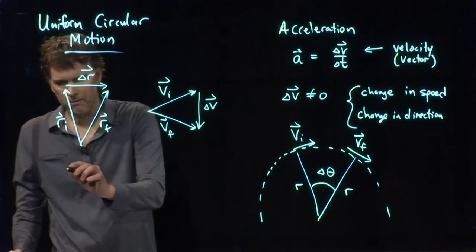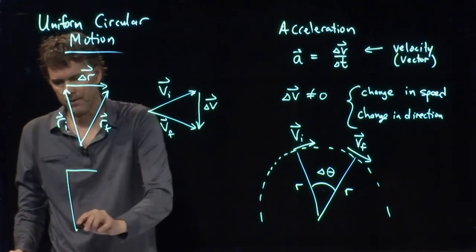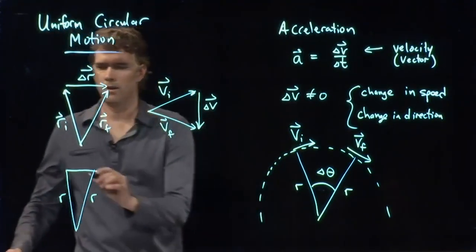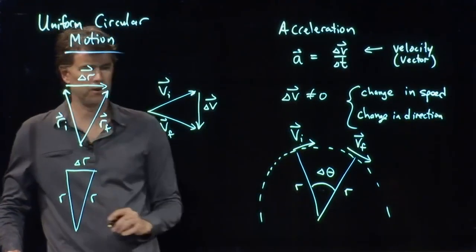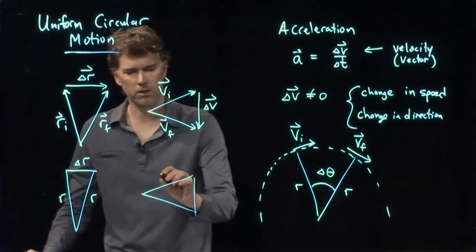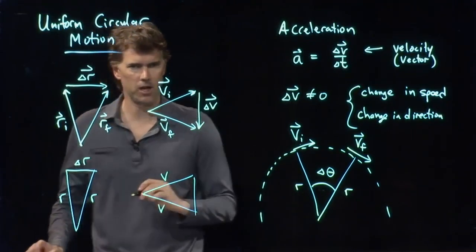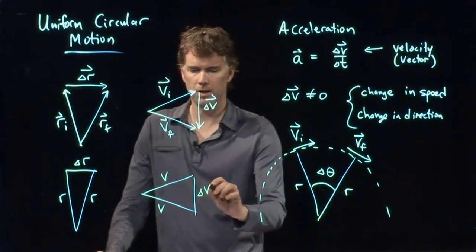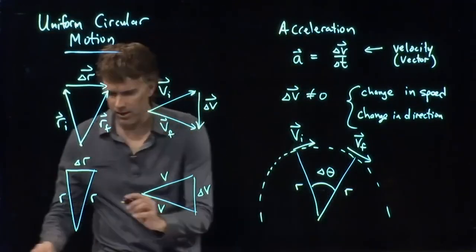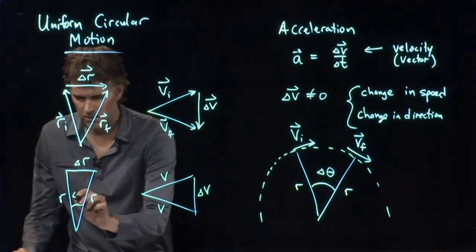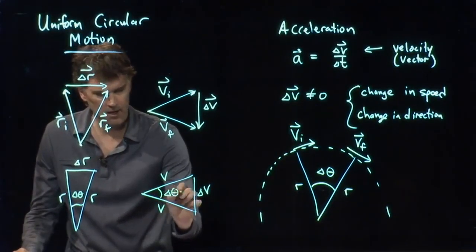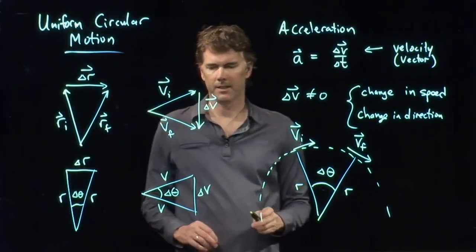But these are just magnitudes now. The radius of the circle doesn't change. That side is just delta r. If we are in uniform motion, the speed doesn't change. That side of the triangle is just delta v. Both of these are making an angle delta theta.